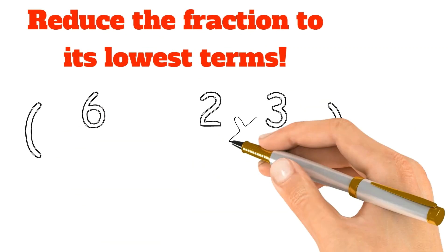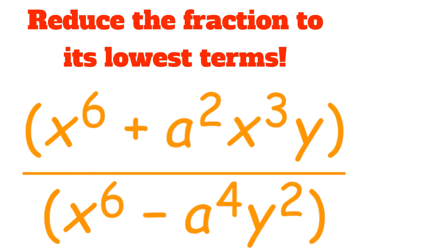The problem from the exam is to reduce the fraction to its lowest terms. The fraction is x to the power of 6 plus a squared times x cubed times y all divided by x to the power of 6 minus a to the power of 4 times y squared.